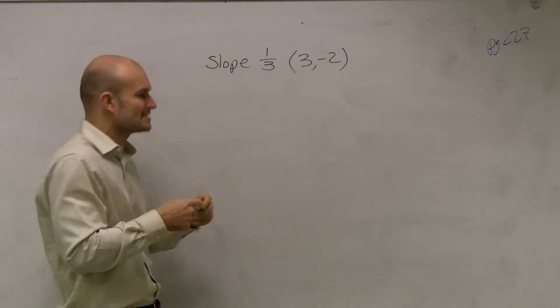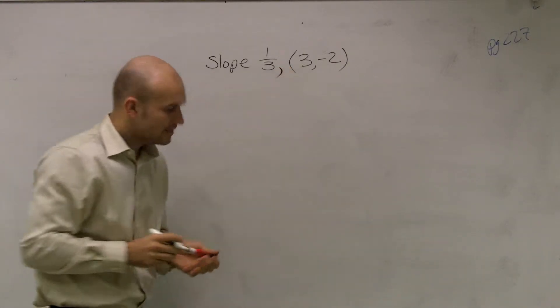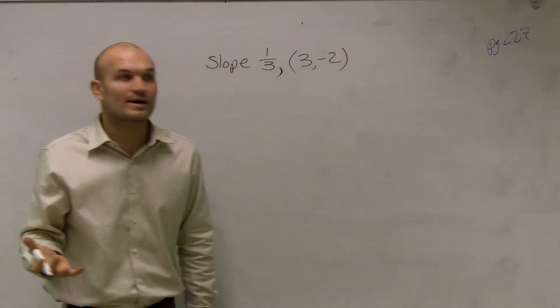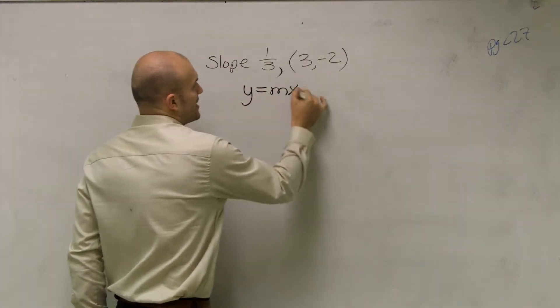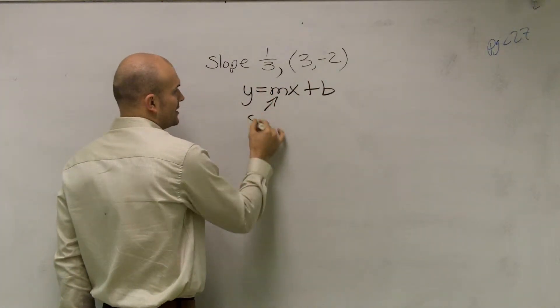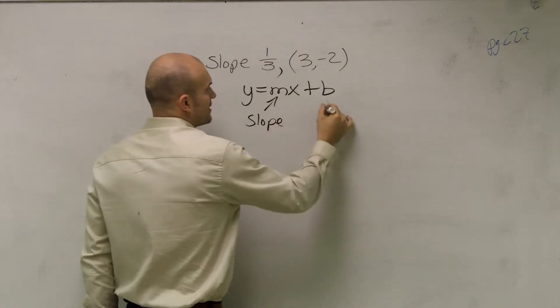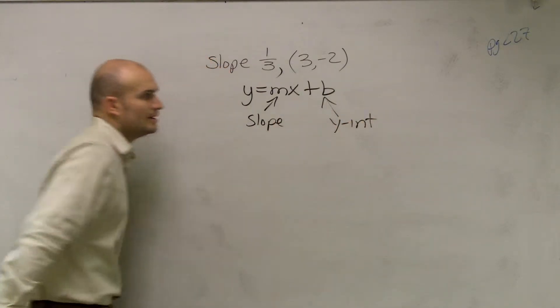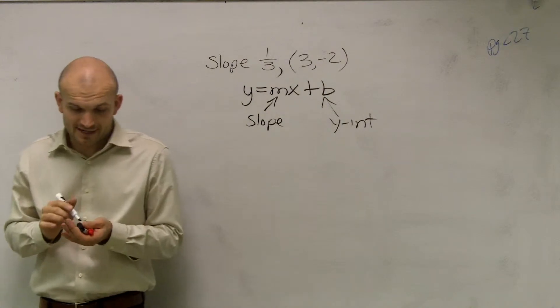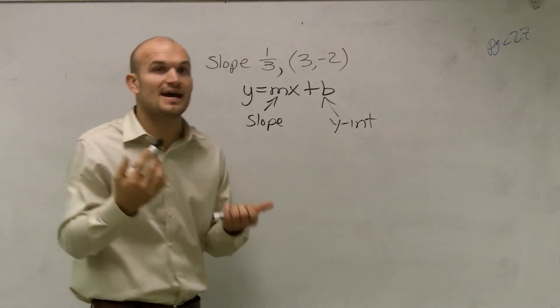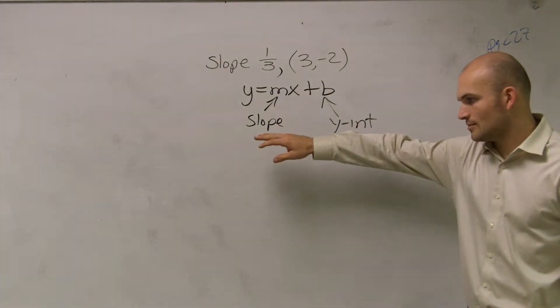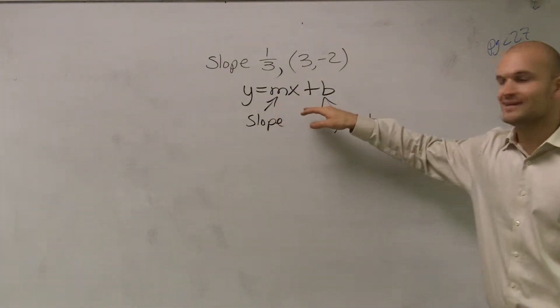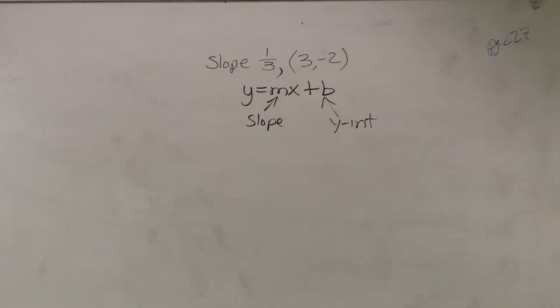What we're looking at here is we're given a slope of 1/3 and a point (3,-2). The only thing we've really learned so far is to find that y equals mx plus b. You guys know that m is your slope and b is your y-intercept. I showed you the point slope form, you didn't like it, so I'm going to re-explain this problem using the slope-intercept form. The equation of the line is y equals mx plus b, where m is your slope and b is your y-intercept.